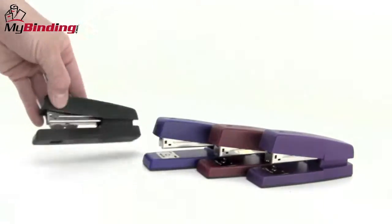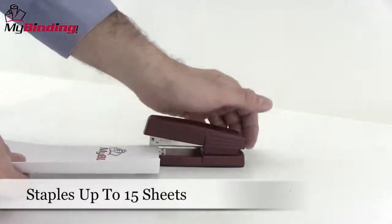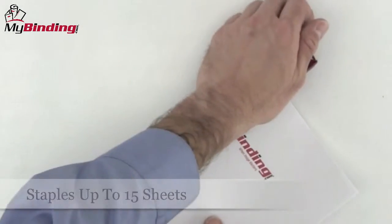Four different colors to choose from, and it's a nice little stapler. It can staple from 2 to 15 sheets of 20-pound paper and has a throat depth of just over 2 1⁄2 inches.